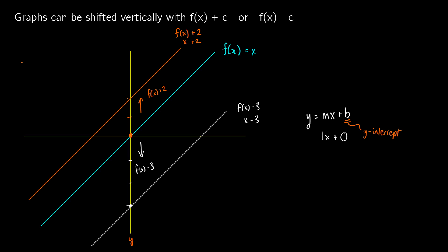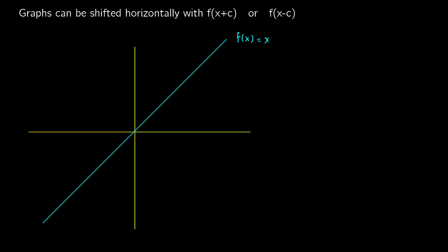Something that's often a little bit more confusing is shifting a graph horizontally. We do this by modifying the x inside the function — you're changing your input a little bit. Here we have the graph f of x. If we graph f of x plus c, you would think that the plus means you're going to shift it right, but that's not the case. If zero equals x and we replace x with x plus c, we get 0 equals x plus c, and moving c to the other side gives negative c. So this indicates a left shift — when we do f of x plus c, we get a left shift.